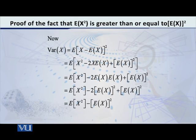After applying the expectation operator to each term, we get: the expected value of X² — that's the first term — minus 2 times E[X] times E[X], just like you are watching on the screen, plus (E[X])² whole square. Because E[X] is a constant — it is the mean — the expected value of a constant equals that constant itself.